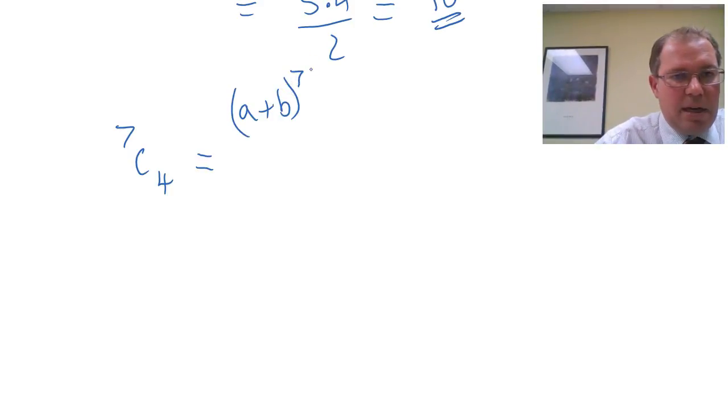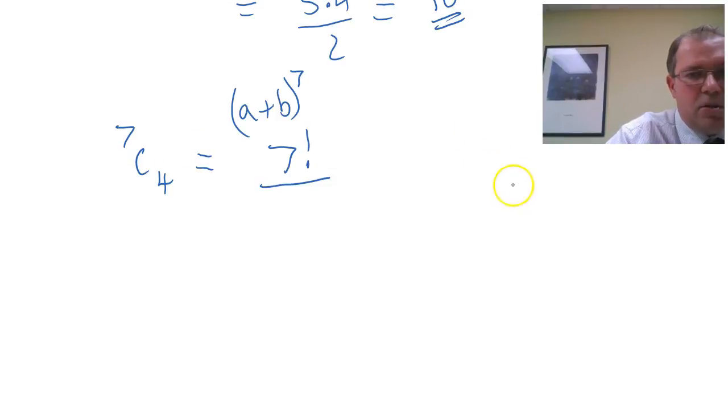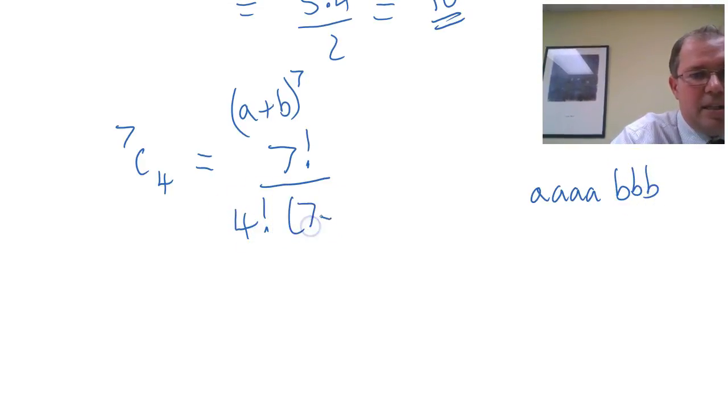A plus b to the 7, and I want the coefficient 7 choose 4. So imagine they're all different. So 7 factorial over 4 of them are the same. So imagine if I had 4 a's, and that must mean I have 3 b's. So 4 factorial, and then I'm going to write here 7 minus 4 factorial, which is, of course, 3 factorial.